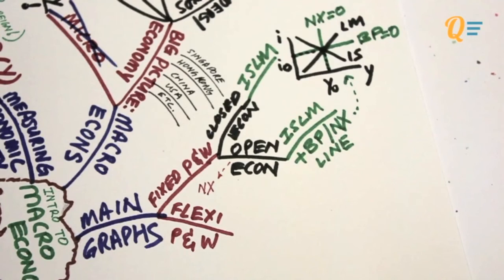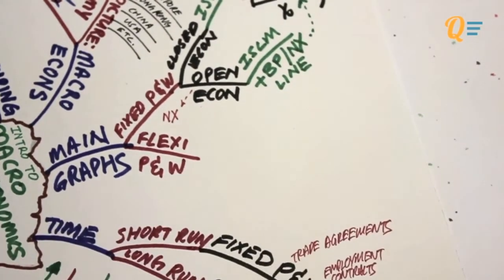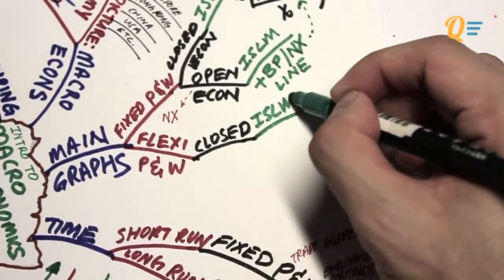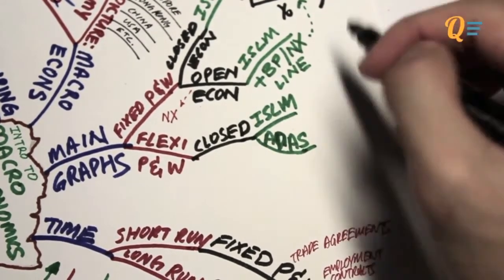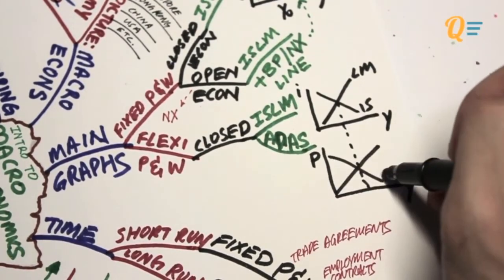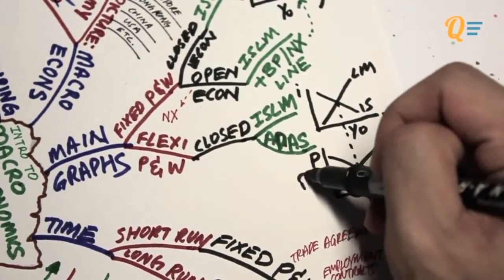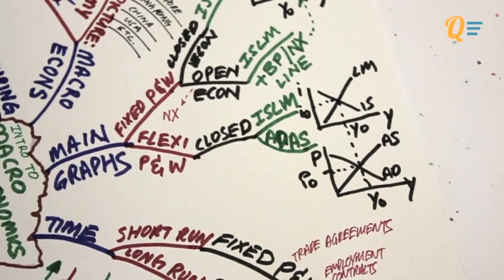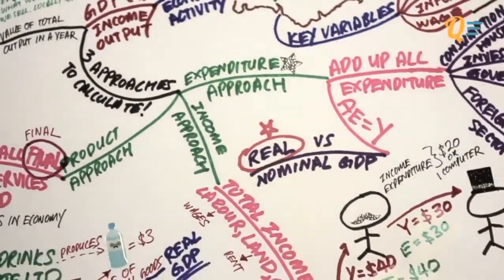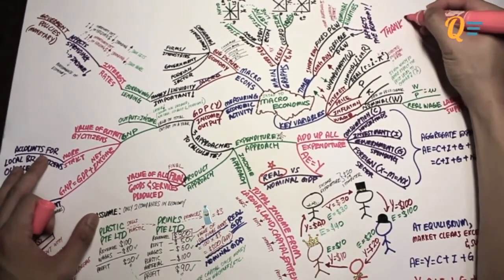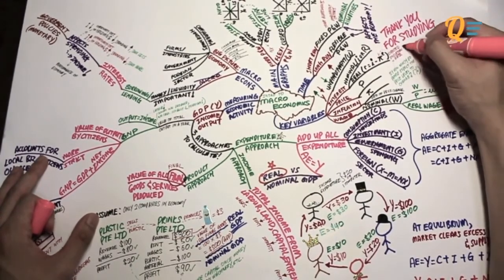We'll cover exchange rate policies — fixed or flexible — in the last chapter. Moving on to flexible prices and wages, we'll only cover a closed economy; an open economy with flexible prices and wages is covered in a level 300 module called Monetary Economics. For a closed economy with flexible prices and wages, you'll use the ISLM model together with the ADAS model — Aggregate Demand and Aggregate Supply — to account for price changes and how they affect the economy. The vertical axis of the ADAS curve is the price level.